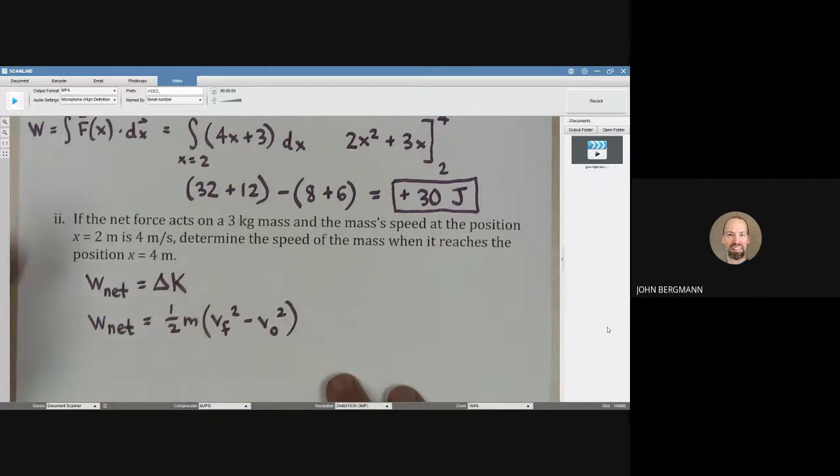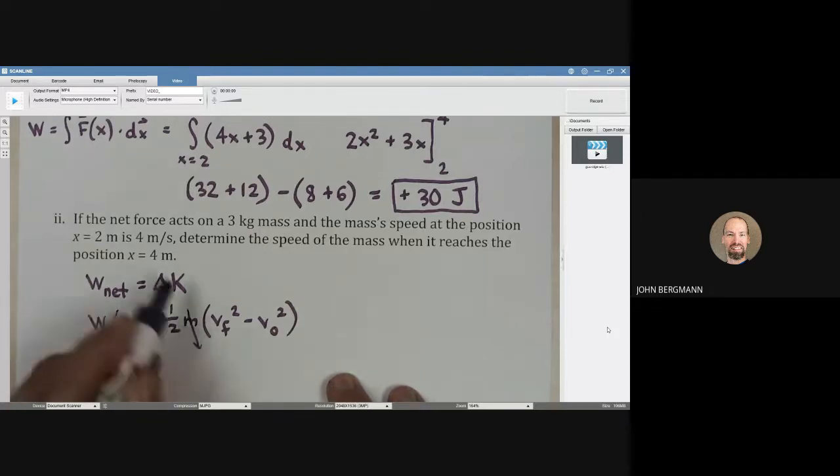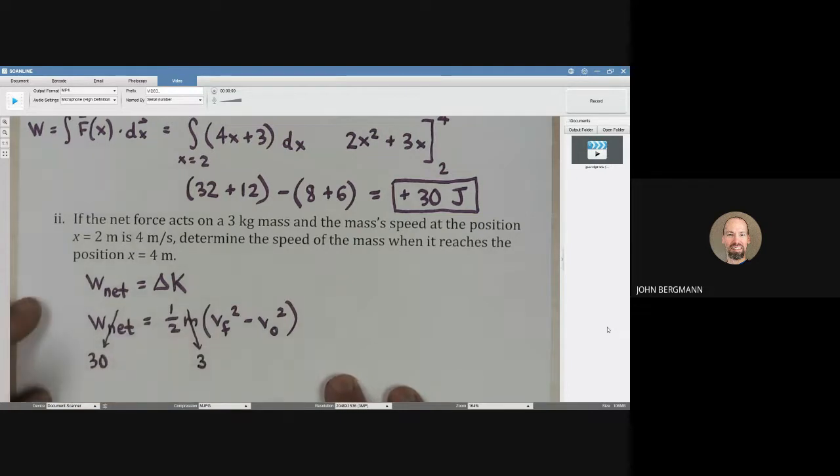What does that give us here? The net work that's done is positive 30. The mass, we're told, is 3 kilograms. I'm leaving the units off because I checked them when I read through the problem, and they are in the right unit. So I'm going to be a little bit lazy and not write the units here. We will, of course, on our answer.